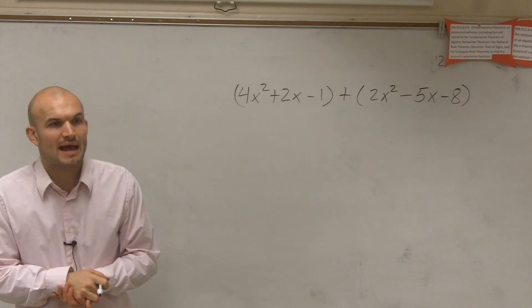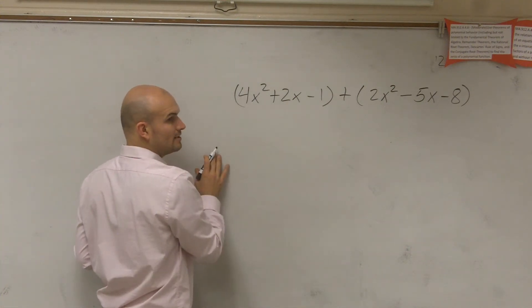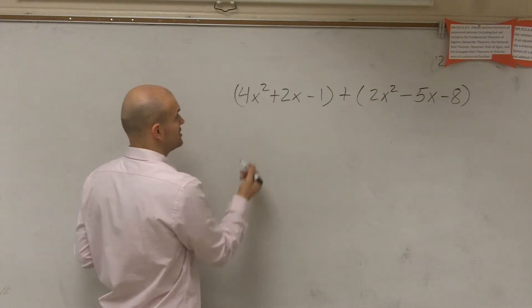So the best way to add polynomials is to write one term on top of the other, which we call the vertical addition method.